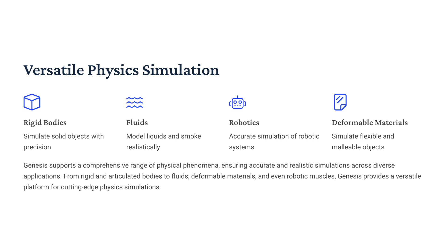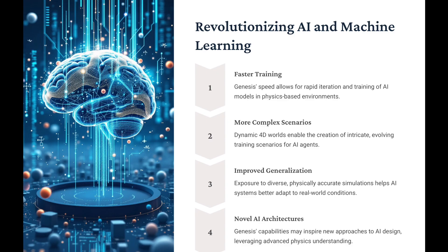How do they achieve this? One key factor is that Genesis takes advantage of the power of parallel processing on GPUs, allowing it to break down simulations into smaller pieces that can be processed all at the same time. This is a big change from traditional physics engines, which were limited by sequential processing. Beyond raw computing power, the team has also made groundbreaking advancements in the algorithms and data structures used to represent and simulate physical phenomena, creating a more efficient and elegant way to model the world within a computer.